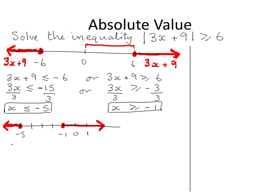We write these solutions as x less than or equal to minus 5, or — and to represent the word 'or' we use the union symbol — x is greater than or equal to minus 1. This is our solution written and represented on a number line.